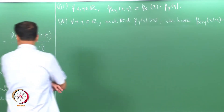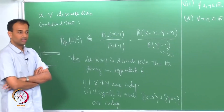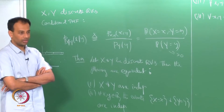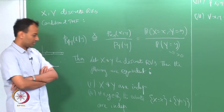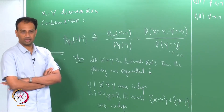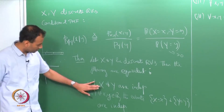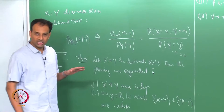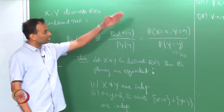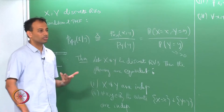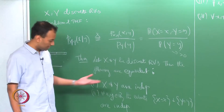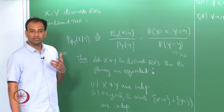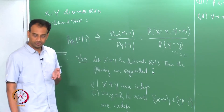This theorem gives equivalent conditions for discrete random variables x and y being independent. We have already defined independence of random variables x and y as the corresponding generated sigma-algebras being independent. For the specific case when x and y are both discrete, this theorem gives further equivalent conditions which are easier to verify — rather than going hunting for sigma_x and sigma_y and proving they are independent sigma-algebras.